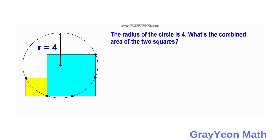Welcome to GrayonMath. We are asked to solve this problem: we have a circle and inscribed in this circle are two squares. The radius of the circle is 4. What is the combined area of the two squares?